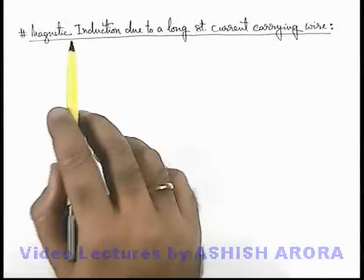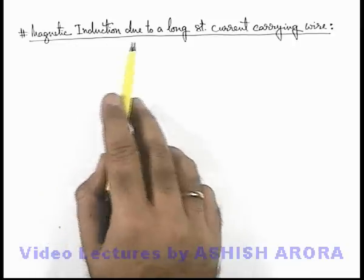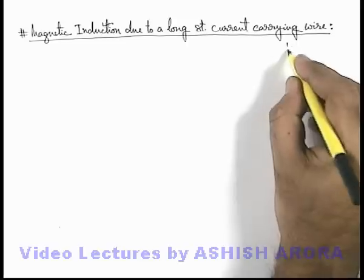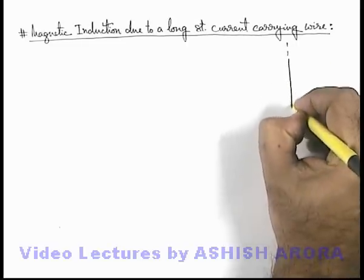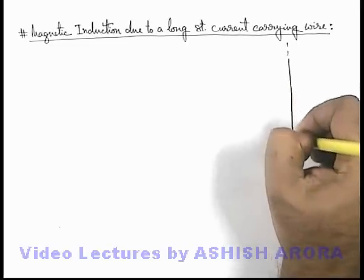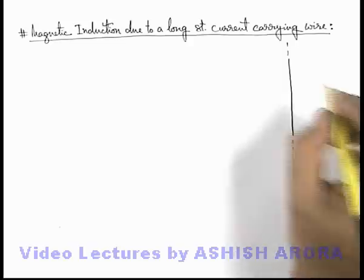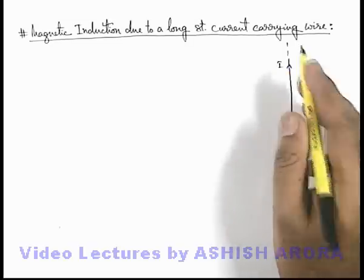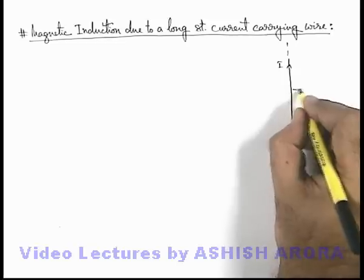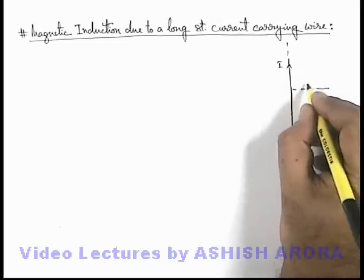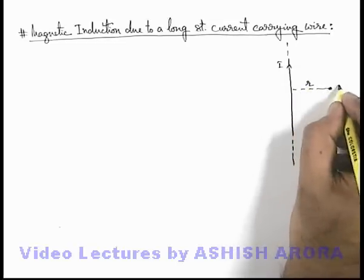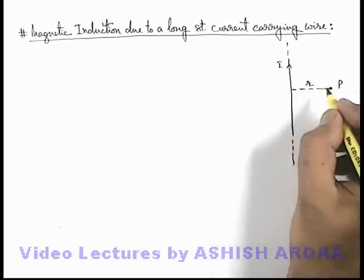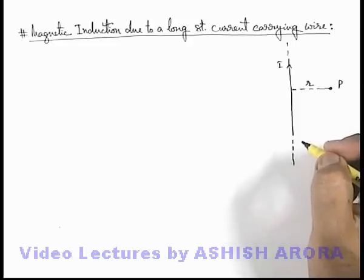Now let's study the magnetic induction due to a long straight current-carrying wire. Say we are given a straight current-carrying wire which carries a current i, and due to this wire at a distance r from it at point P, we are required to find the magnetic induction due to this wire.